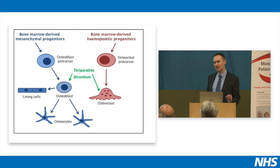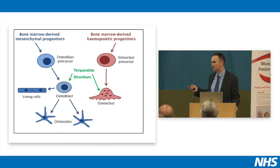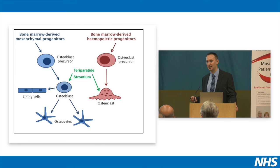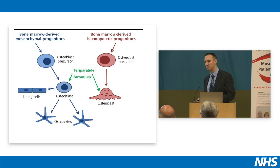Another drug is strontium, given in sachet form — something you can drink, usually in the evening. It's not known exactly how it works, but it may have effects on osteoblasts and osteoclasts. We tend to use this drug less now because more recently it's been shown to be associated with clots in the leg and lung, and also with heart attacks. So we only use it now after other medications have been tried, and in people who are at very low risk of those conditions.